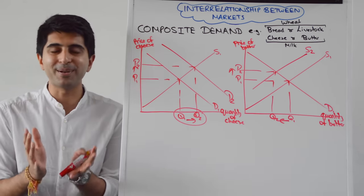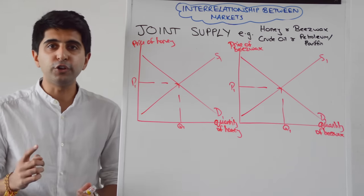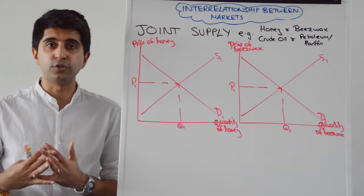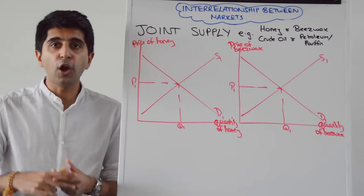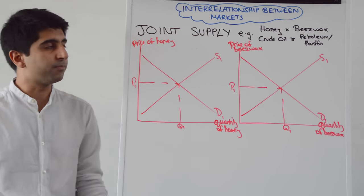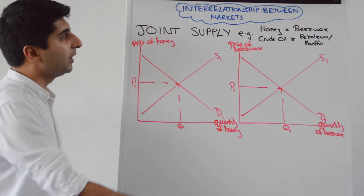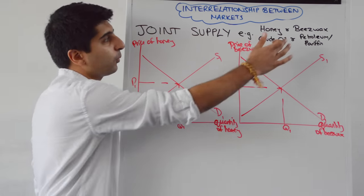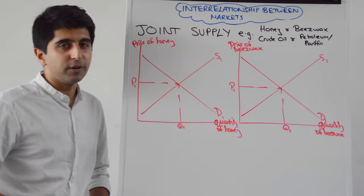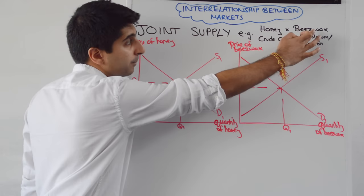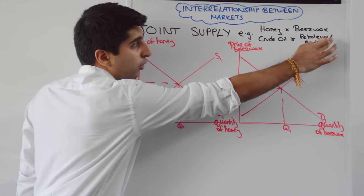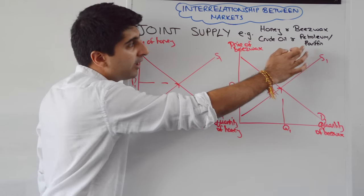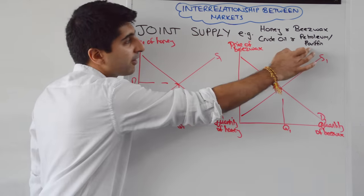Let's move on and look at joint supply. Joint supply is the idea that an increase in the production of one good will increase the supply of another good — either because that second good is a byproduct of the first, or because the second good needs the first to be produced. Take honey and beeswax: when production of honey goes up, supply of beeswax will naturally increase because beeswax is a byproduct of producing honey. Beeswax is useful in producing candles and lipsticks. Whereas petroleum and paraffin require crude oil, so when production of crude oil goes up, supply of petroleum and paraffin will naturally increase.